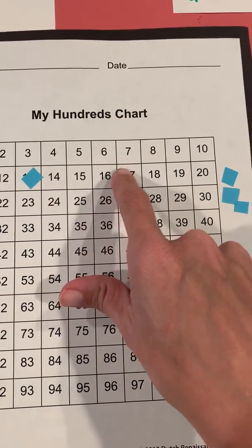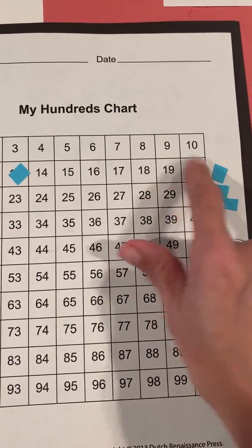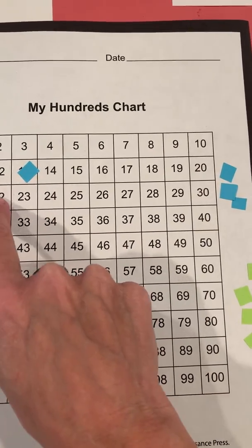1, 2, 3, 4, 5, 6, 7, 8. Notice how I went from 20 to 21, that was 8, 9, 10.